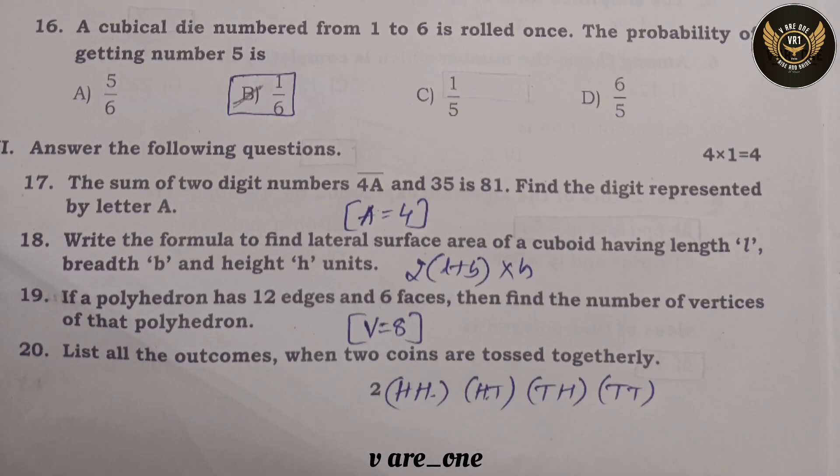Second section — Seventeenth question: the sum of the 2-digit number 4a and 35 is 81. The digit represented by the letter a is: a = 4.